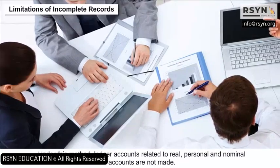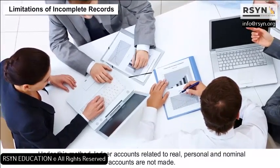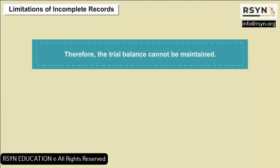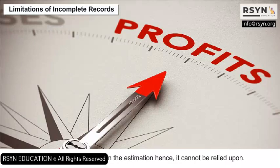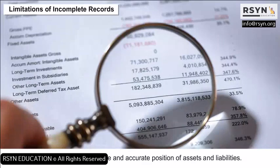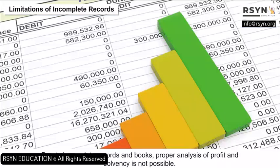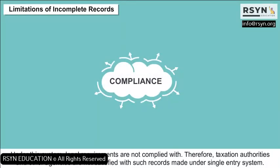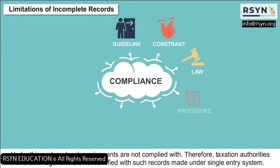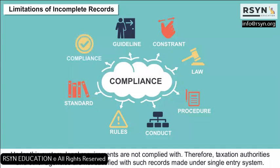Limitations of incomplete records: Ledger accounts related to real, personal, and nominal accounts are not made, therefore the trial balance cannot be maintained and arithmetical accuracy cannot be checked. The profit is based on estimation, hence it cannot be relied upon. It does not reflect the true and accurate position of assets and liabilities. Proper analysis of profit and solvency is not possible. It is very difficult to detect errors and frauds. Legal requirements are not complied with, so taxation authorities are not satisfied with such records made under single entry system.